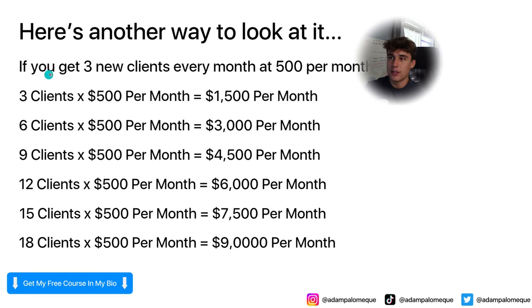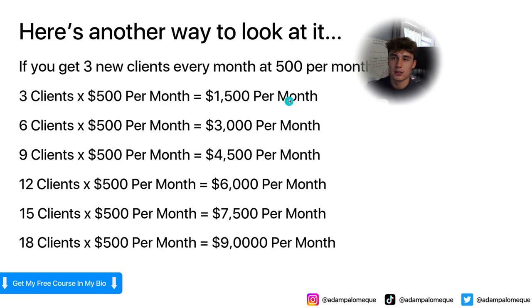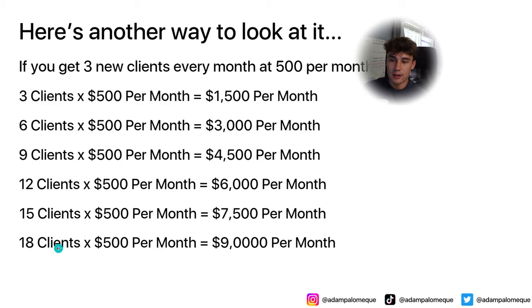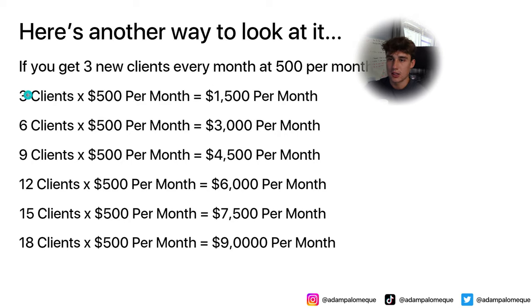Here's another way to look at it: if you get three new clients every month at $500 per month — month one three clients, you'll make $1,500 per month. Month two six clients, $3,000 per month. Month three nine clients, $4,500 a month. Month four 12 clients, $6,000 a month. Then 15 clients at $7,500, then 18 clients at $9,000 a month. And every single one of these clients, after you set them up, it's all passive. So this essentially becomes more of a passive income stream.